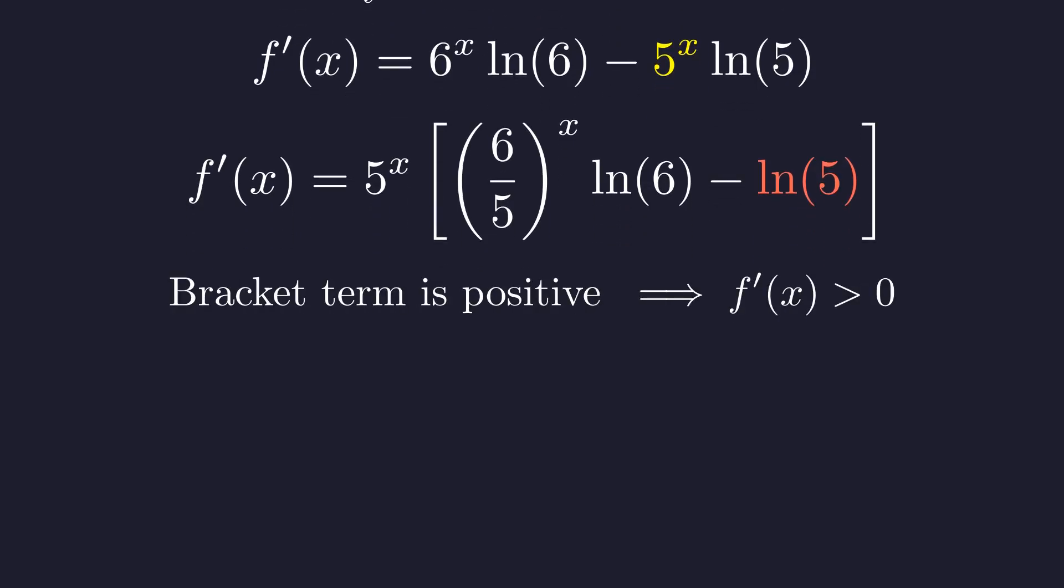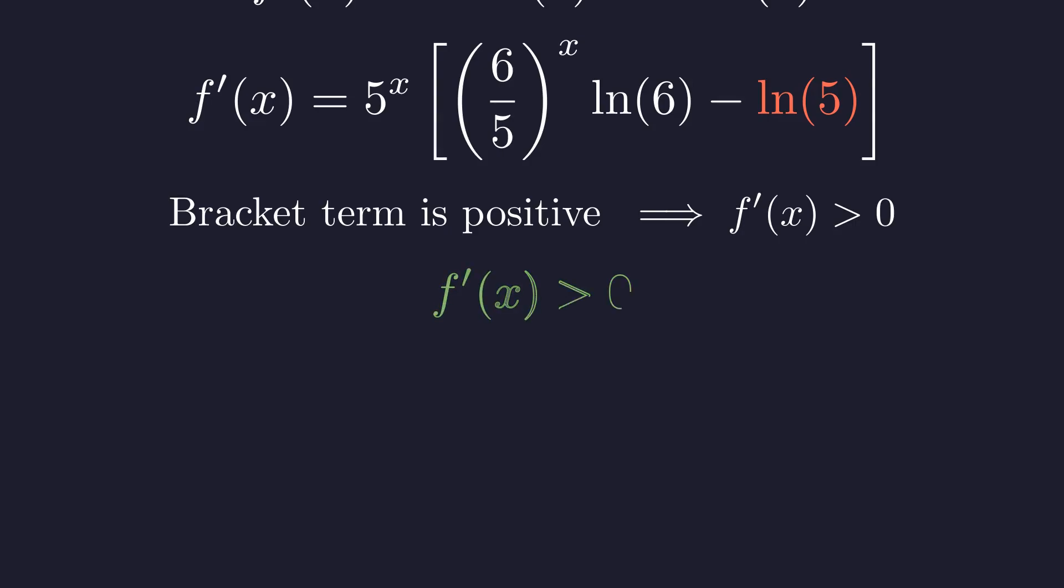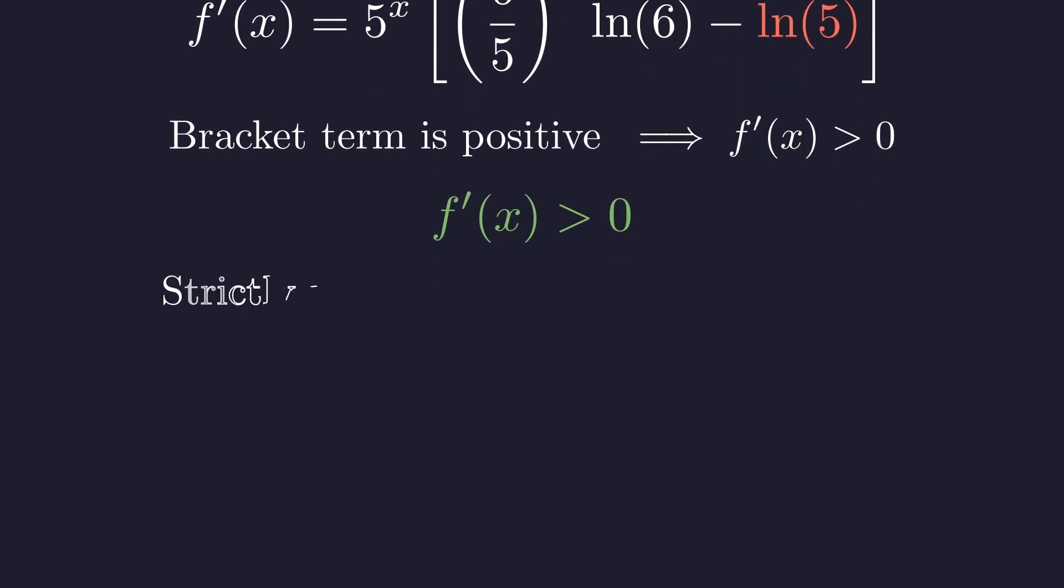So the entire bracketed expression is positive, and since we're multiplying a positive number by another positive number, the whole derivative is positive. This tells us that f prime of x is always positive when x is positive, and what does that mean? Well, it means our function is strictly increasing for positive x.